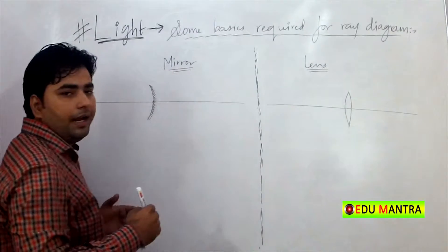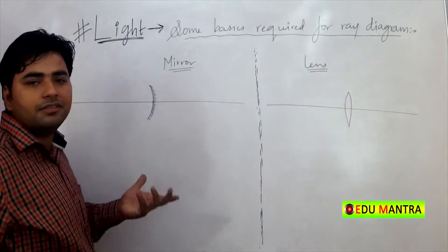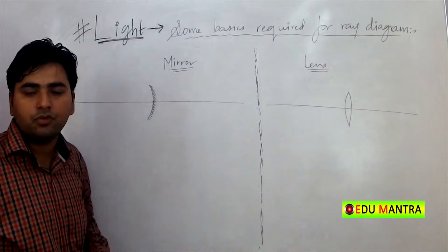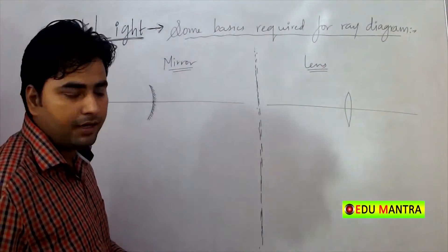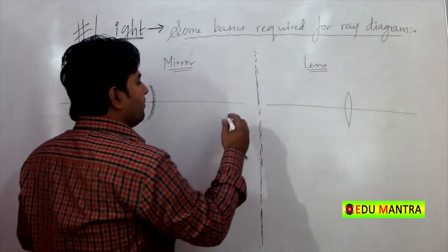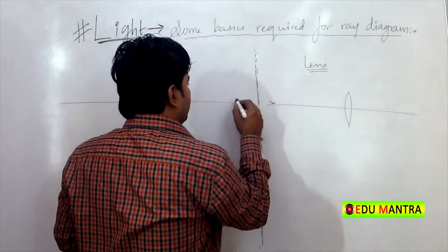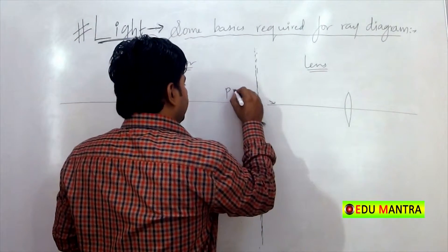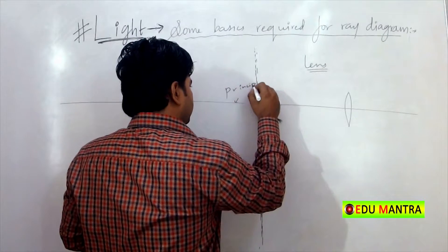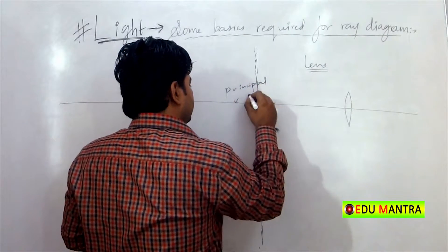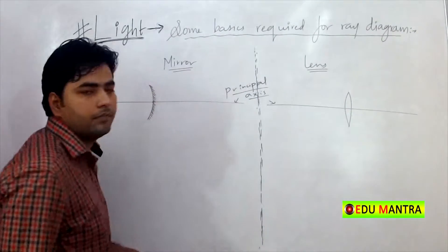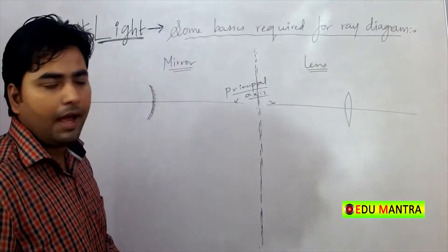And what is that line? Obviously, this is an imaginary line. This line is called the principal axis.